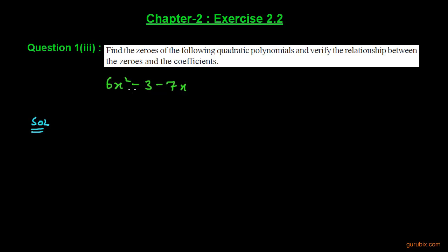We shall take the polynomial and write it in its standard form — first the term of x squared, then the term of x, then the constant term — and we shall denote it by p(x) because the variable is x. Now we shall factorize this polynomial.